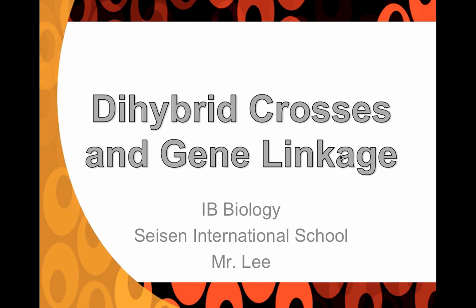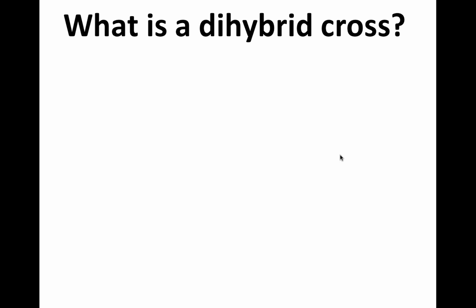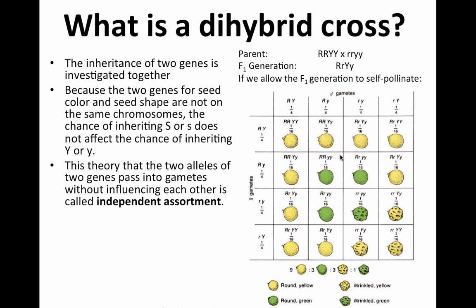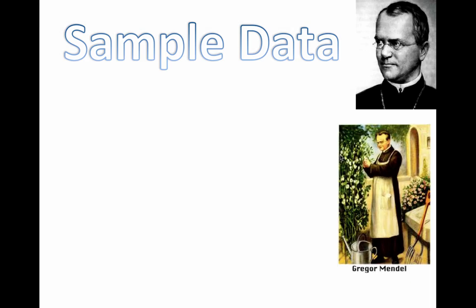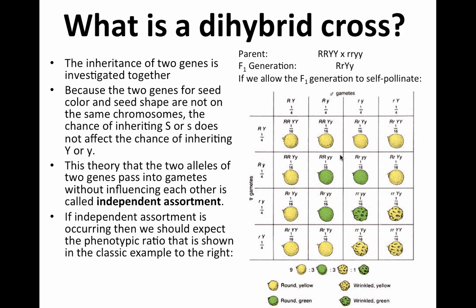Everything you've done up until this point with dihybrid crosses assumes there is no gene linkage. In other words, those two genes — whatever letters you're looking at, R and Y — are actually on separate chromosomes. This 9 to 3 to 3 to 1 ratio should be very familiar by now.